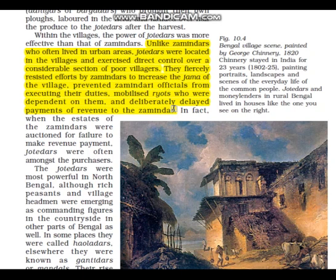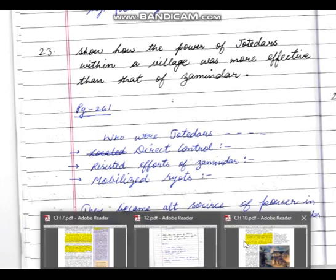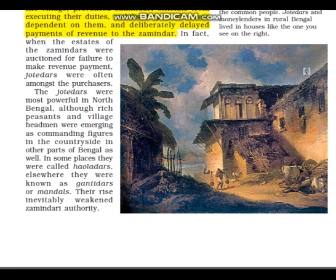Conclusion for this question, taken from the main text: 'They became the alternative source of power in the village. In fact, they were the purchasers when Zamindari estates were being auctioned. Their rise inevitably weakened the Zamindari authority.'